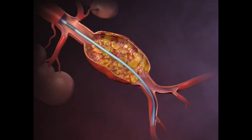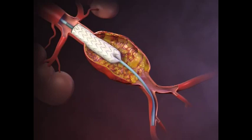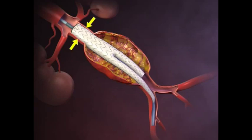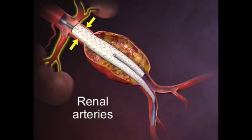The body of the stent graft, composed of a non-permeable polyester material supported by a self-expanding flexible metal frame, is partially deployed with the undeployed upper portion of the device positioned immediately below the renal arteries.